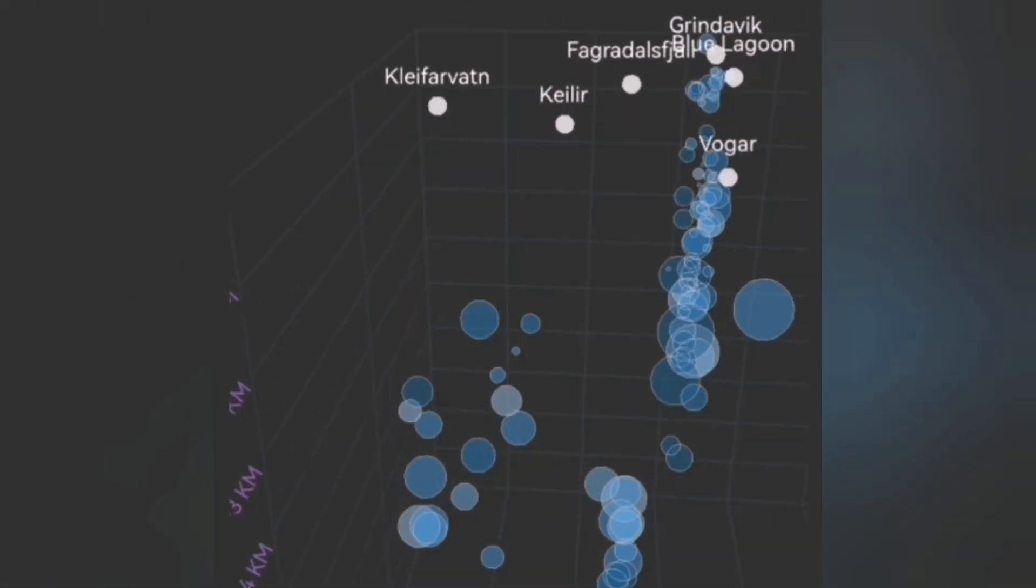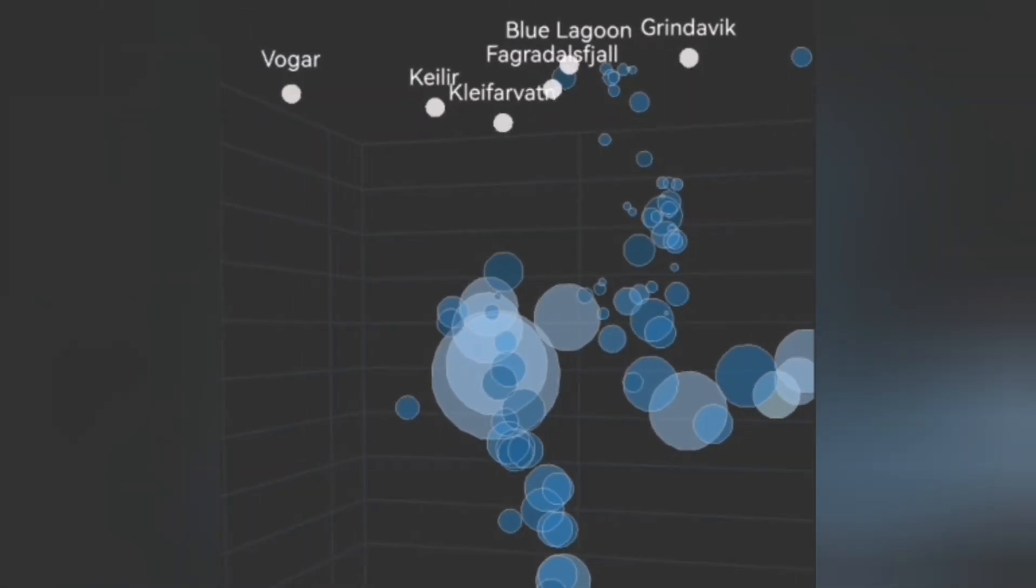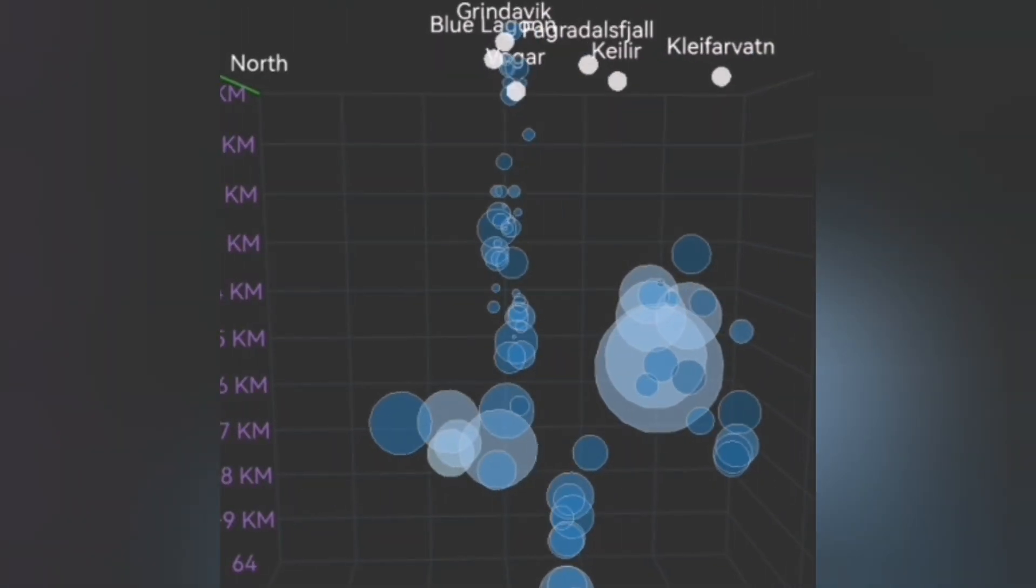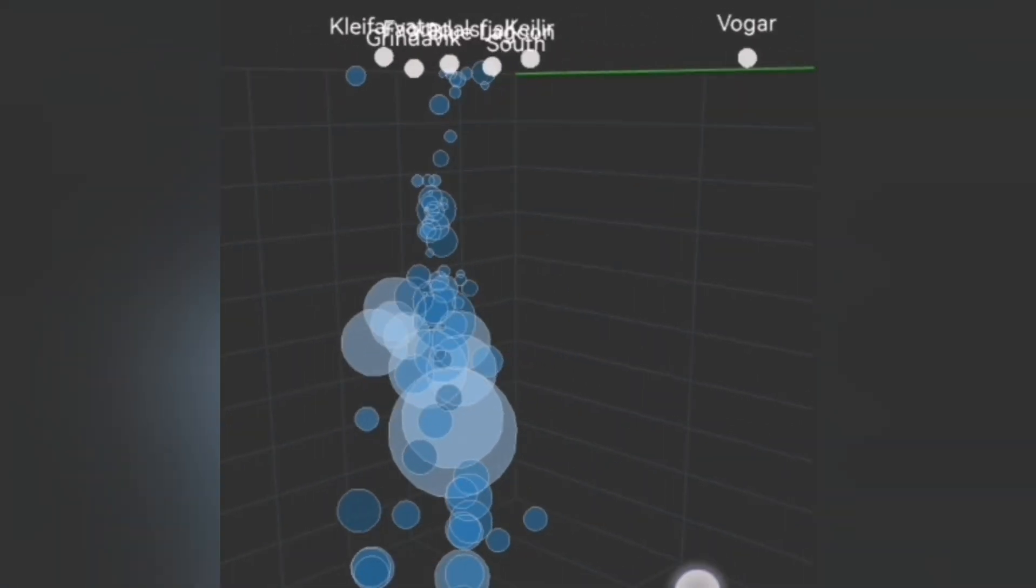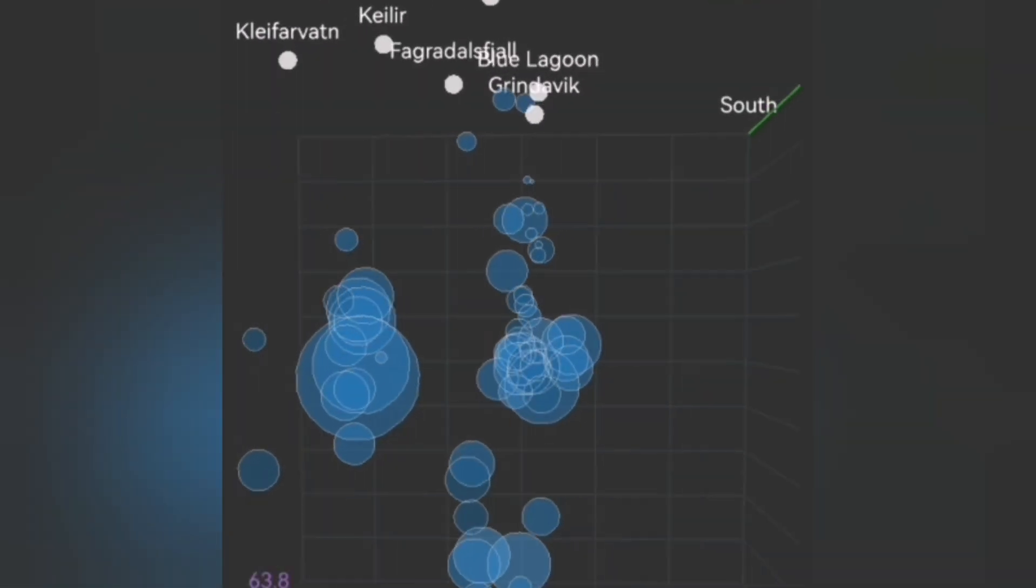Just a few days ago, the earthquakes were small, they were all at the depth of 5 km. Now it seems they're rising. We have bigger earthquakes, 3.3 we had, and then the earthquakes are getting shallower, rising.